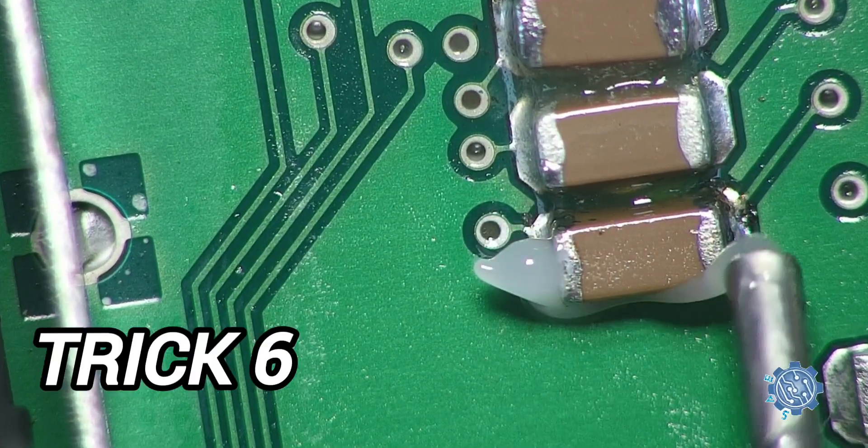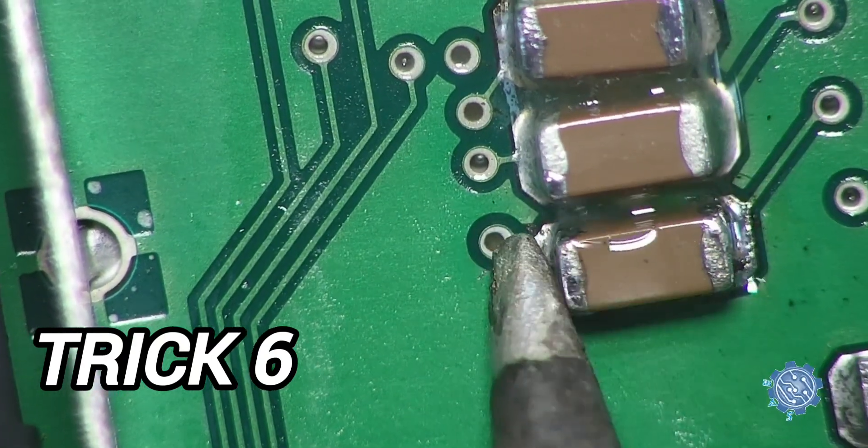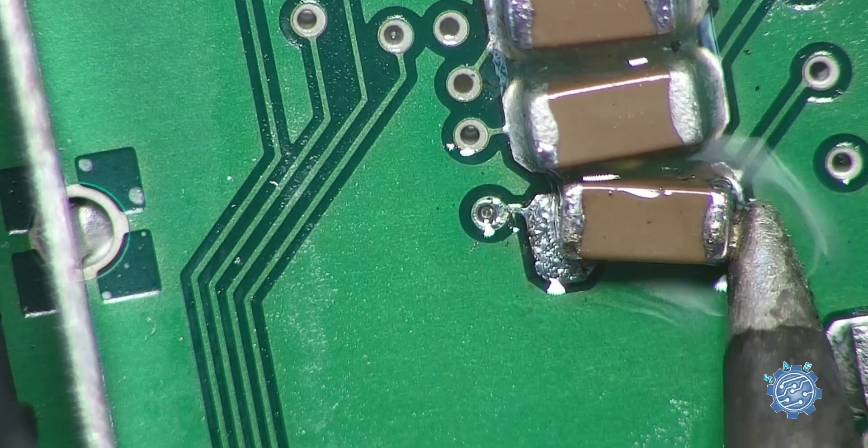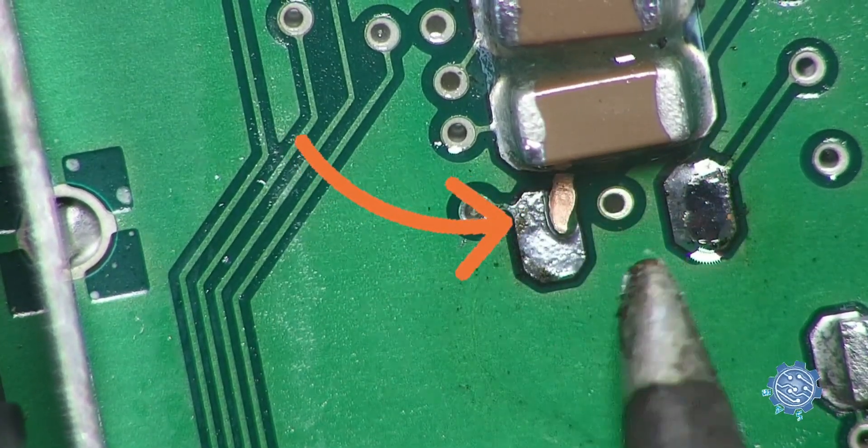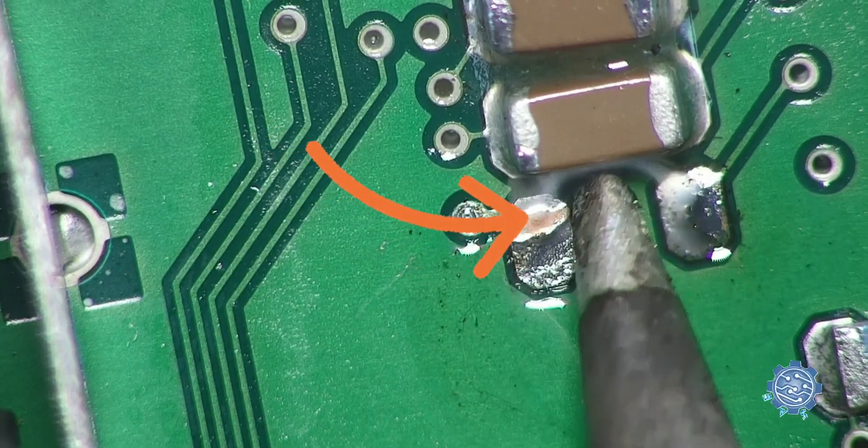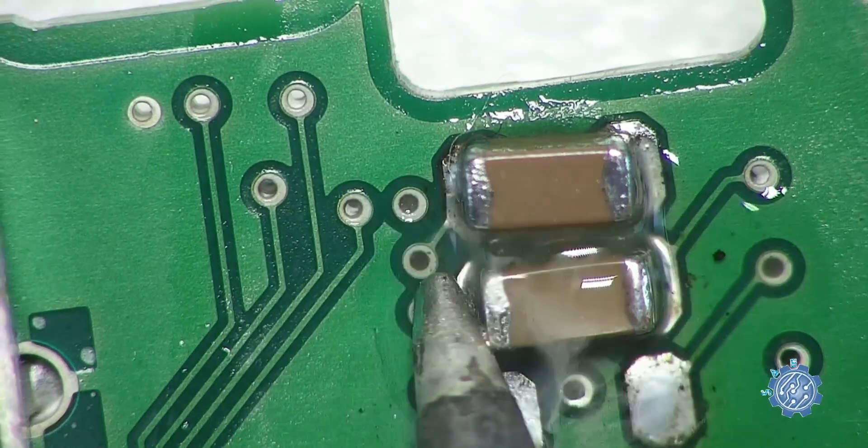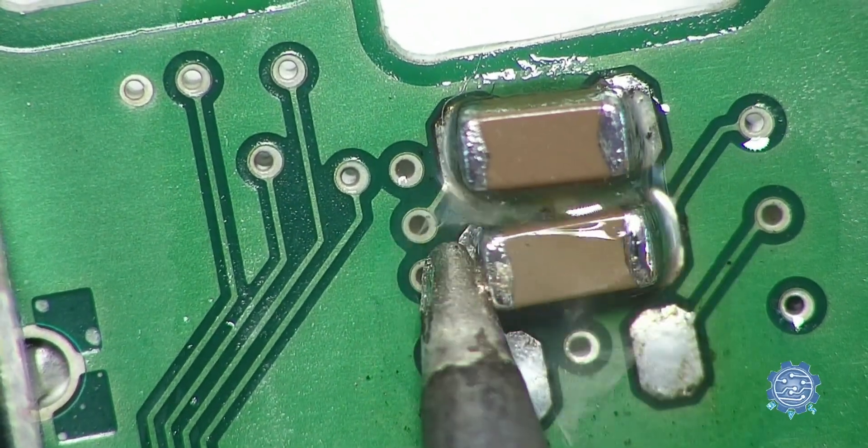De-soldering an SMD capacitor is straightforward. Use flux, heat each side quickly, avoid excessive pressure of the iron tip to prevent damage to the capacitor pad. Heat both pads by swiftly moving the iron tip until the capacitor can be easily removed.